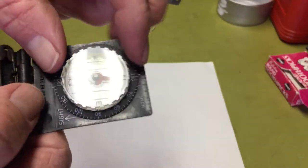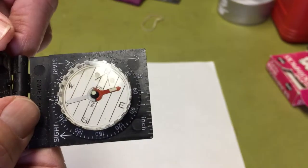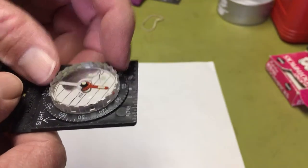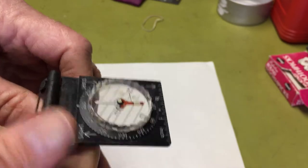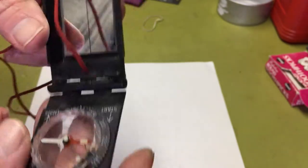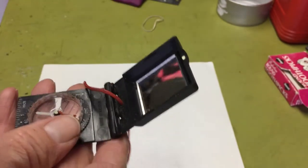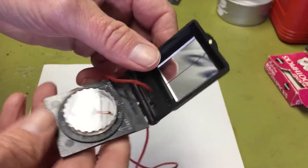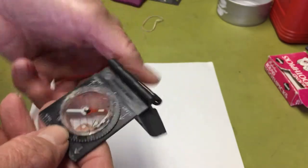It does have those, so you can line these up on your map to get a course off your map, then set it in and track the course. It's got the sighting mirror, so it's a fully functional navigation compass, but it's small and you can just pin it on your coat.